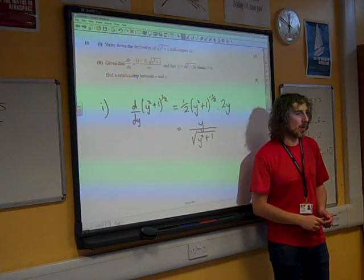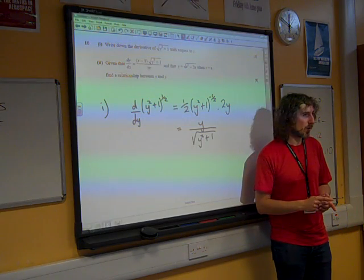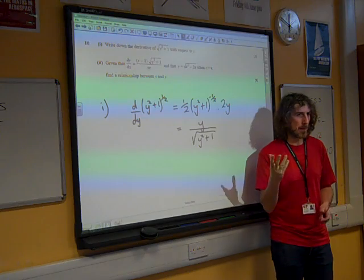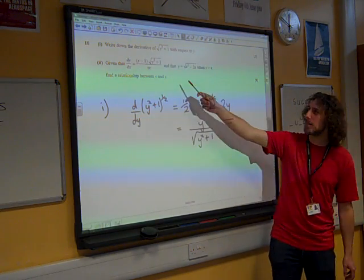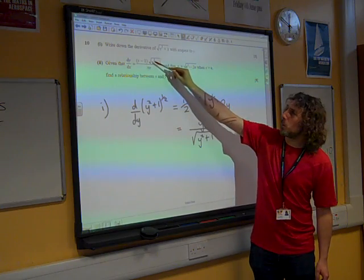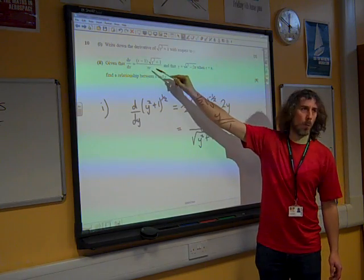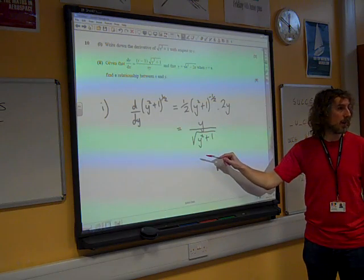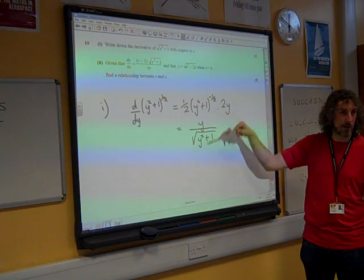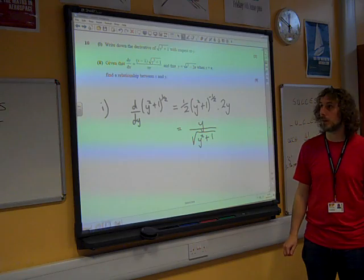Now, constantly, we're already thinking, why did they make us do that bit of core three differentiation? And then you look here and you see we've got root y squared plus 1 over y, which is the reciprocal of what we just have there. So you can see already the link emerging in the two parts of the question.